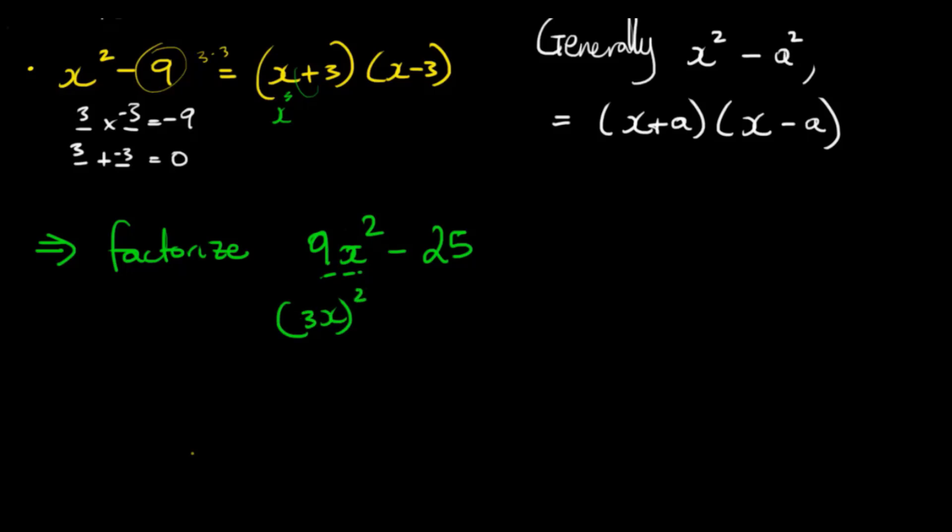because 3x all squared is 3x times 3x, which would be 3 times 3, 9, x times x, x squared. And over here, 25 is 5 squared. So 25 is also a squared number.